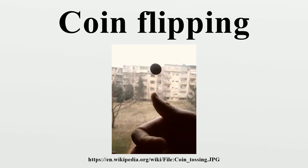Coin-flipping, coin-tossing, or heads or tails is the practice of throwing a coin in the air to choose between two alternatives, sometimes to resolve a dispute between two parties. It is a form of sortition which inherently has only two possible and equally likely outcomes.